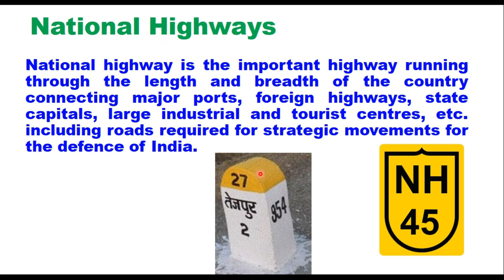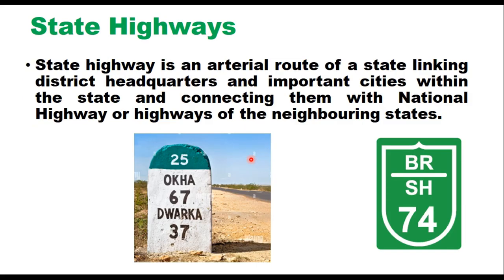National highways can be identified by their yellow cap kilometer stone, and therefore these highways are allotted yellow color. Whenever you see a milestone with a yellow cap and a national highway number written on it, that is the national highway.